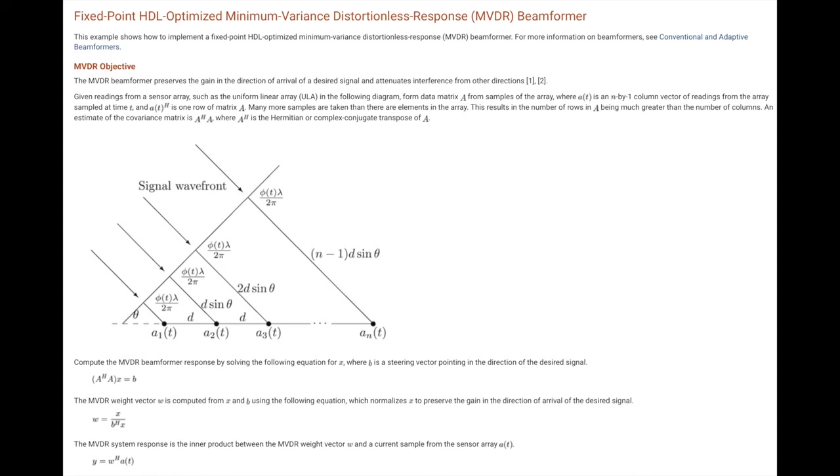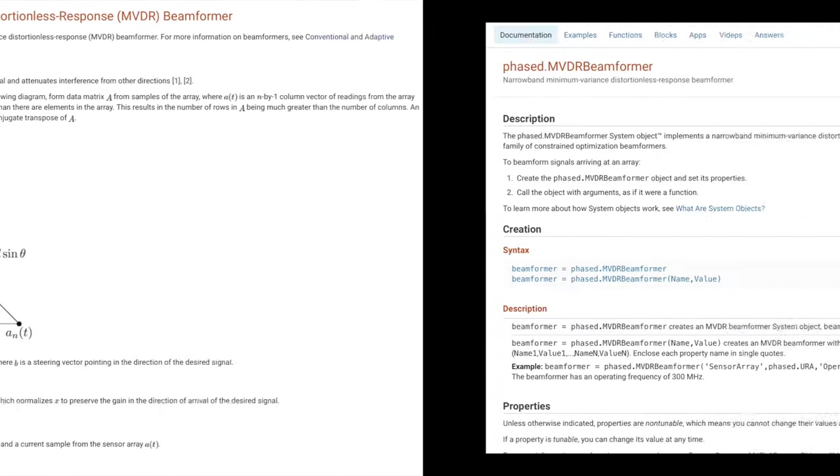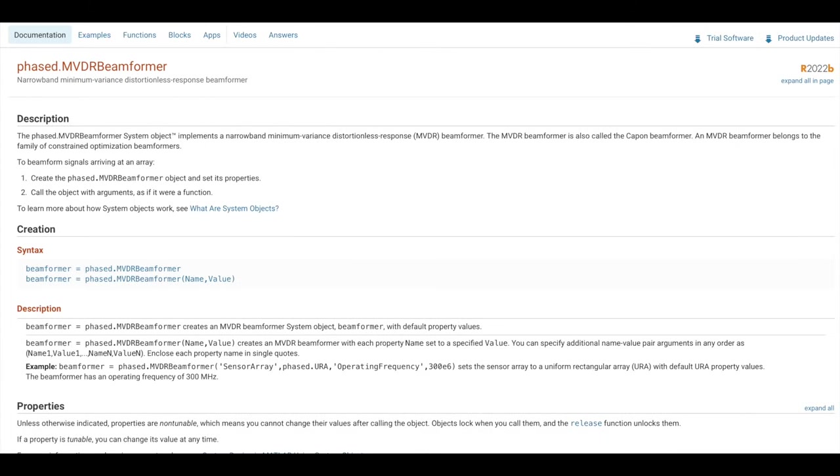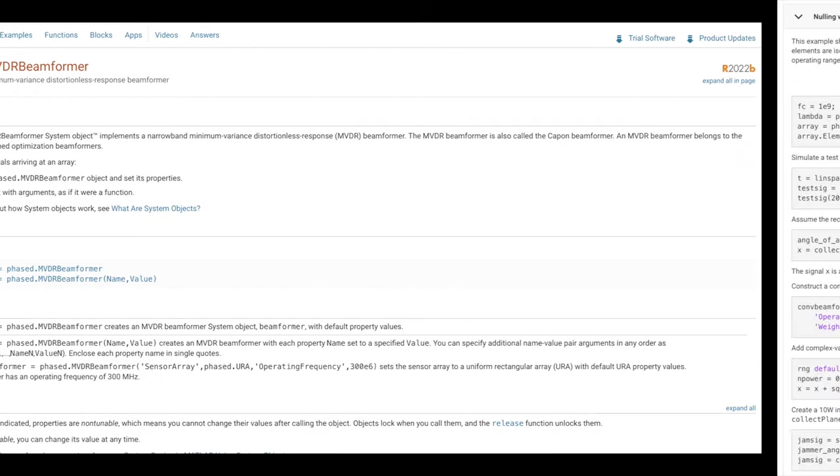Now, I've linked to a page that walks through the details of the mathematics of this algorithm if you're curious. But for this video, I'm going to use MVDR Beamformer, which packages that optimization algorithm up into a simple MATLAB function. Alright, so we need a few things for this function to work, like the environment, the direction of the signal, and the array specifics.